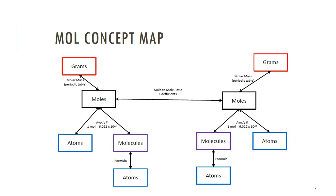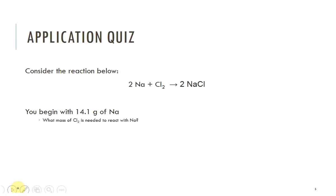Here's a reaction where we have two moles of sodium reacting with one mole of chlorine to produce two moles of sodium chloride. We can go from anywhere to anywhere at this point — from grams of one substance to grams of another, or grams to molecules — because we have that concept map that tells us how to convert between different units. Let's say we started with 14.1 grams of sodium. How many grams of chlorine would we want?